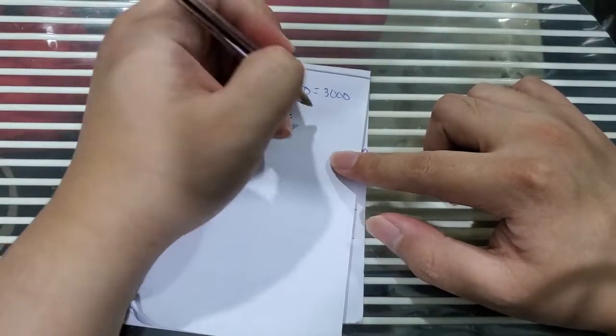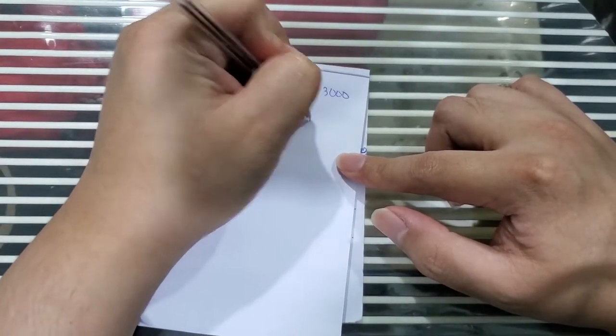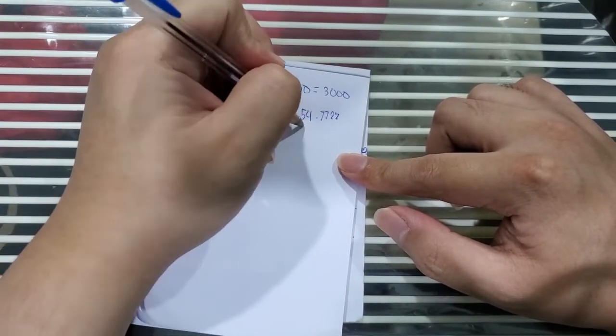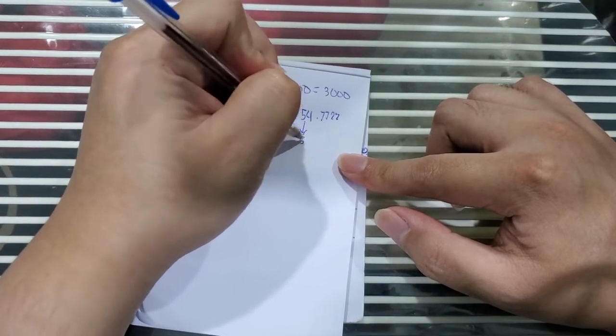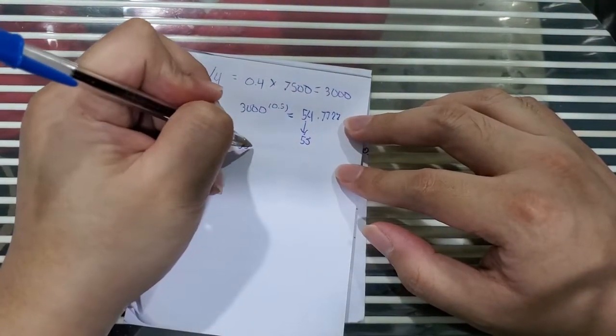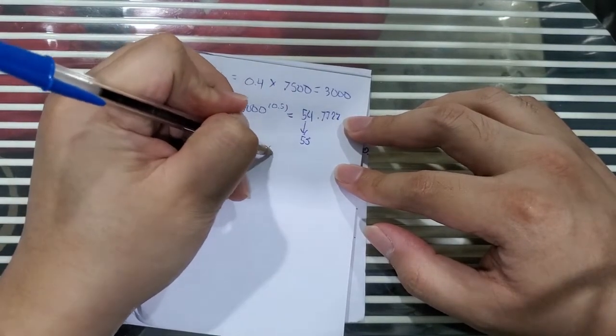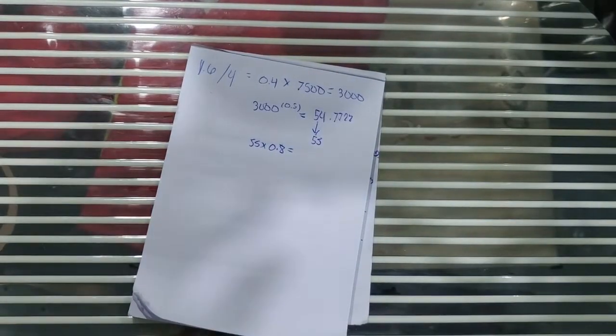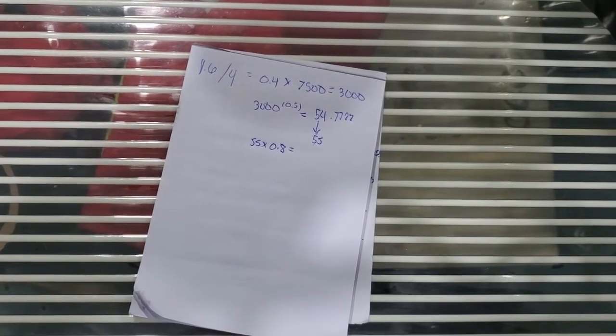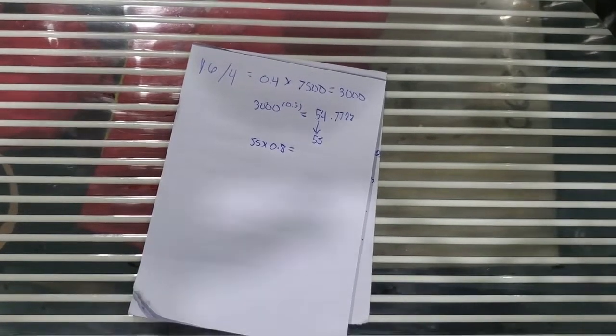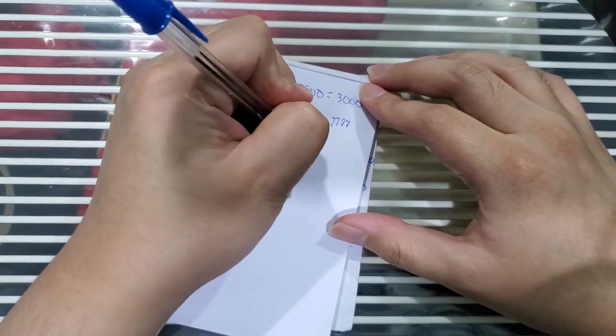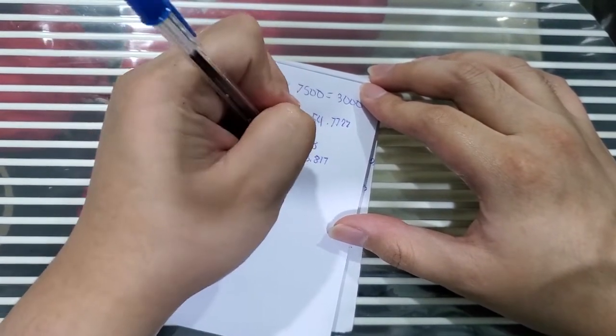Then you would carry this 3000 to the power of 0.5, that would equate to 54.7722—let's just call that 55. Then you would multiply 55 by 0.8.